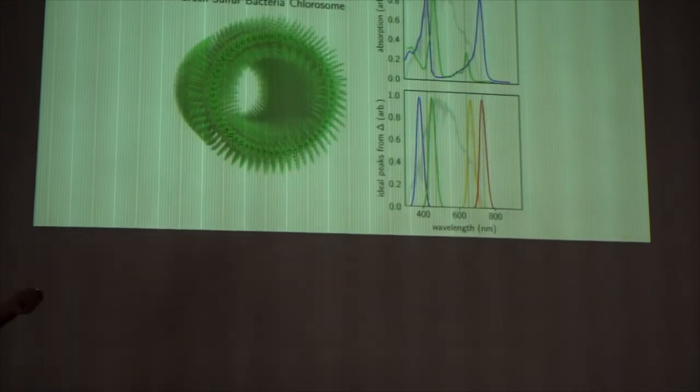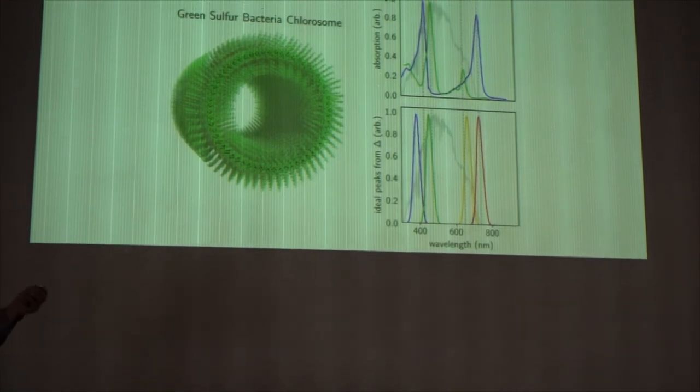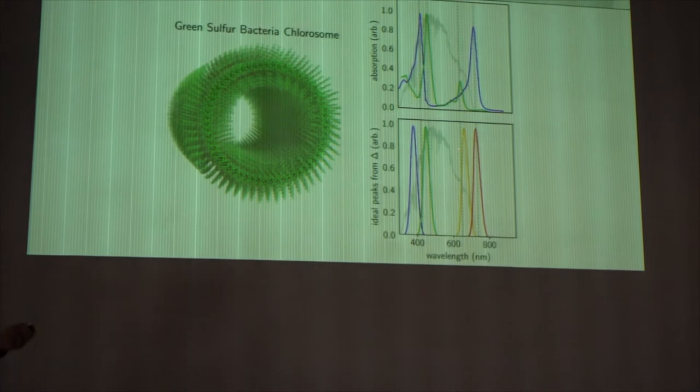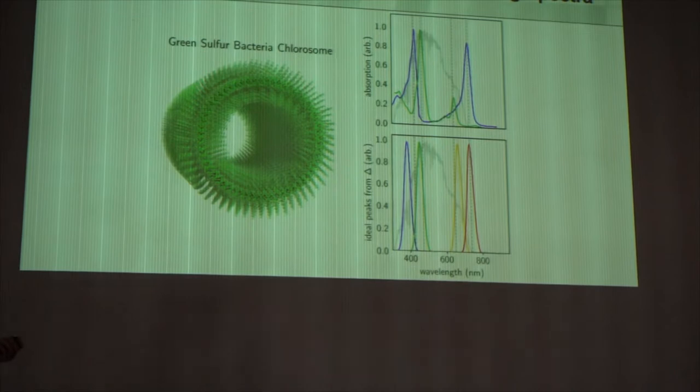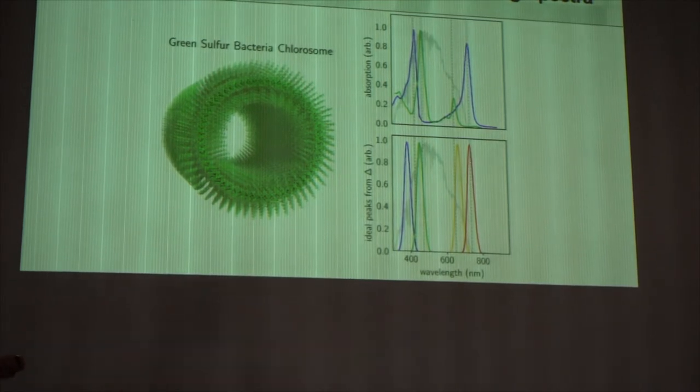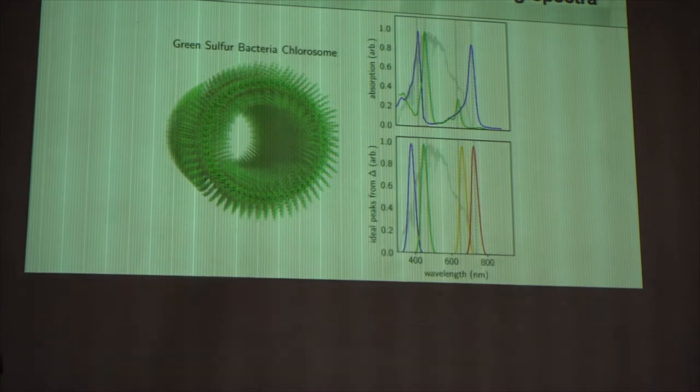Then we did another one. We looked under seawater, and we looked at these green sulfur bacteria, and again we were able to reproduce their absorption spectrum. What you'll see in all of these, which is really kind of key, is that all of them come in pairs, they all have two pigments, and they all live on this part of the spectrum that is not the peak.